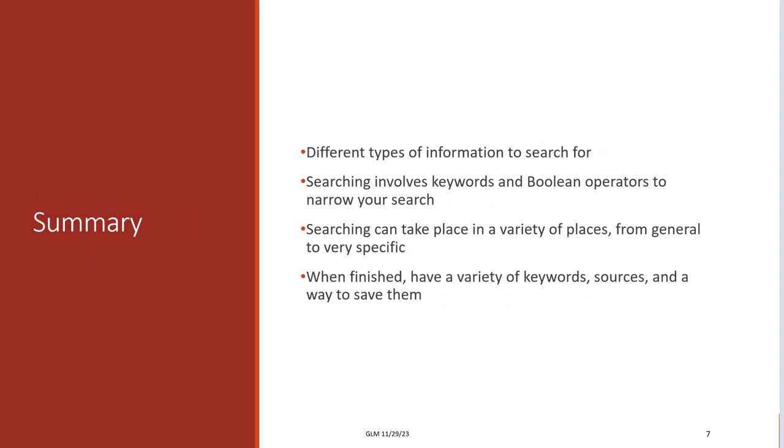In summary, effective source searching involves considering various factors including types of information, keywords, and Boolean operators. Searches can be conducted across a range of platforms, from general databases to discipline-specific resources. After completing your search, you'll have a diverse collection of sources that can be saved through various methods. If you have any questions, feel free to reach out through the nursing reference guide or the staff directory. Have a great day!